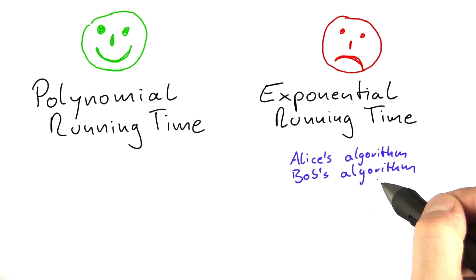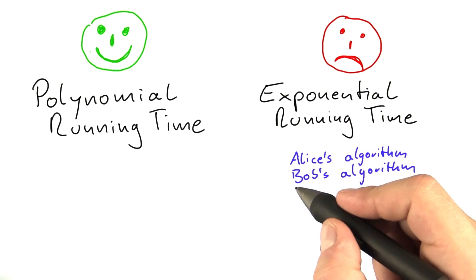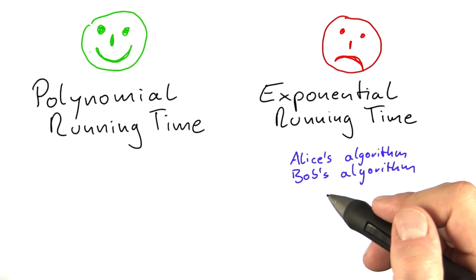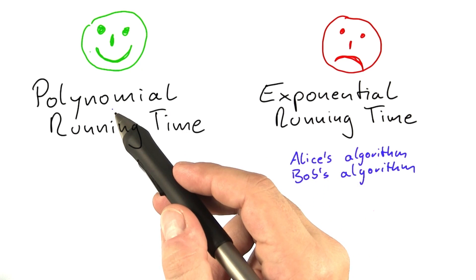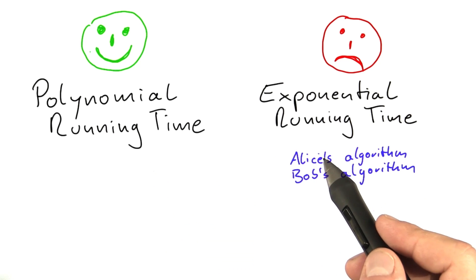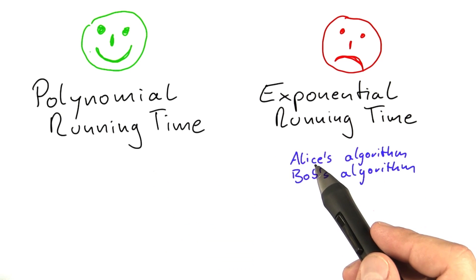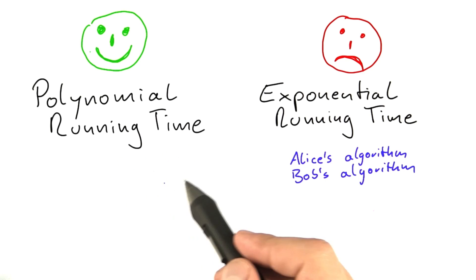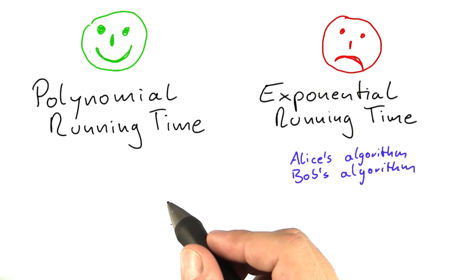So the question of course is, does the fact that Alice and Bob have not yet been able to come up with a polynomial time algorithm mean that the problems they are working on are only solvable in exponential time? Or could there be some sort of polynomial time algorithm that they haven't found yet?